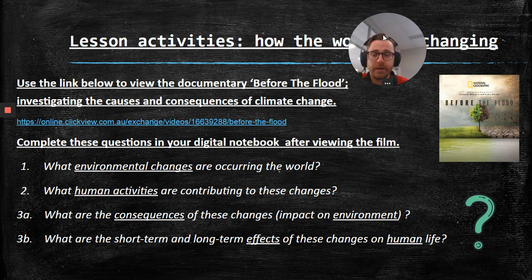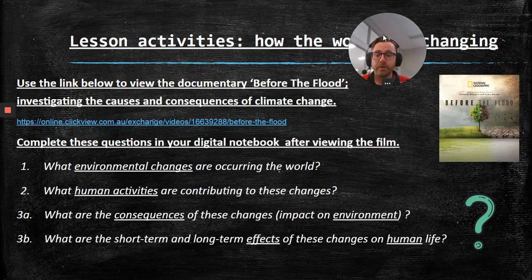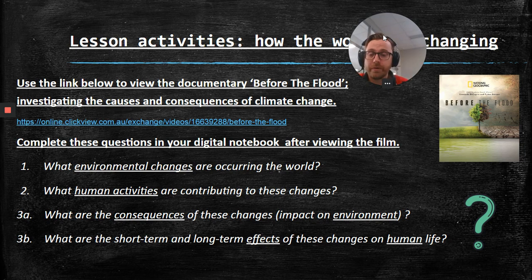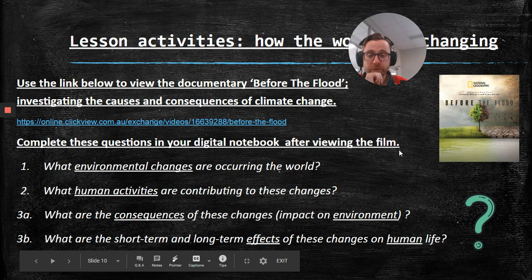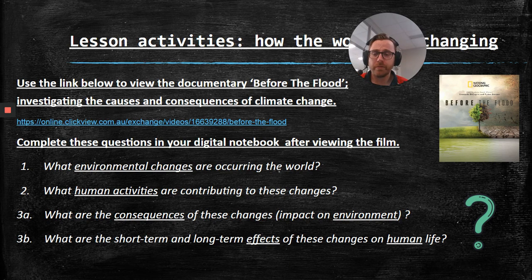The questions you're looking at while watching or after the film are: Question one — what environmental changes are occurring in the world, how is the environment changing? Question two — what human activities are contributing to these changes? For example, if question one is climate change, question two asks what is causing climate change. Question three A — what are the consequences of these changes, what is the impact on the environment? And question three B — what are the short-term and long-term effects of these changes on human life? So 3A is focused on the environment and 3B is focused on human life.